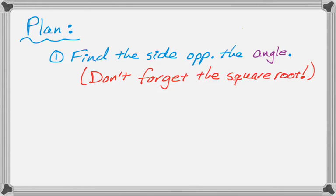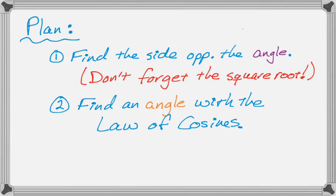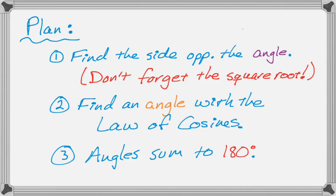After I find that side, what I'm going to do is I'm going to use the law of cosines to find one of the other angles. So I'm going to use the law of cosines twice in this problem. And then after I've done that, I could use the law of cosines to find the third angle, which is probably the best idea. But what I'm actually going to end up doing is I'm going to use the fact that all the angles of a triangle add up to 180 degrees. So that's how I'm going to tackle the problem.